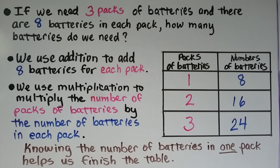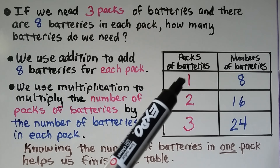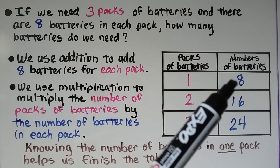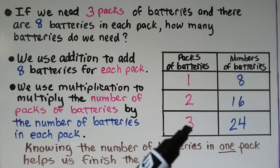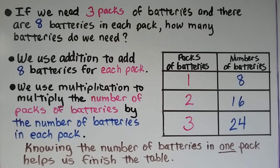If we need 3 packs of batteries and there are 8 batteries in each pack, how many batteries do we need? We use addition to add 8 batteries for each pack, and we use multiplication to multiply the number of packs by the number of batteries in each pack — the 8. Knowing the number of batteries in one pack helps us finish the table: 1 pack has 8, so 2×8=16 batteries, and 3×8=24 batteries. We're going to need 24 batteries.